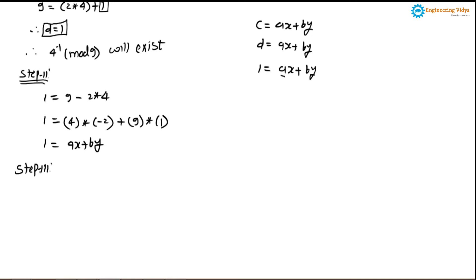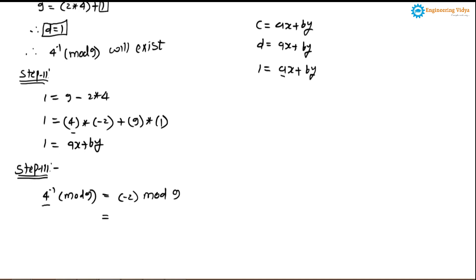At step 3, we evaluate the inverse. We need to calculate 4 inverse mod 9. This is a shortcut trick: we search for 4 in the Diophantine equation we arranged. We find 4 in the equation, then check what number is attached to it. Here, 4 is attached with minus 2.